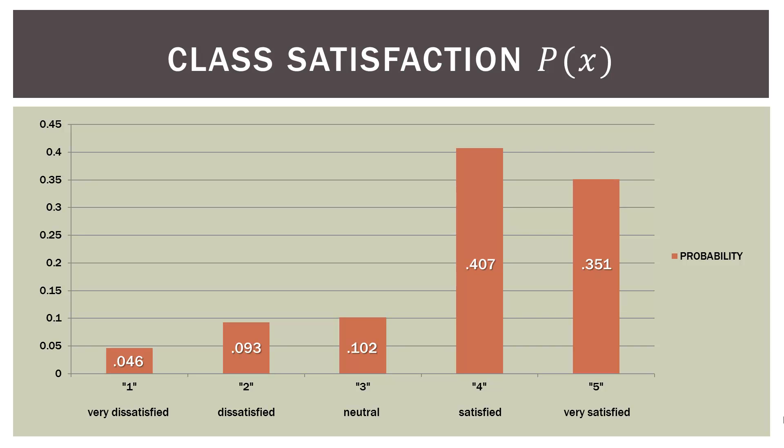Here's what the chart looks like — our class satisfaction probabilities as a bar chart, with very dissatisfied at the bottom and the probability labeled on each bar. You can see it's highly skewed to the right, with a lot of probability on the satisfied and very satisfied end of the distribution. If you're the instructor, that's a good thing — it either means you're doing a great job or your students don't want to hurt your feelings.